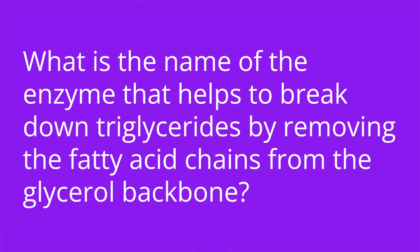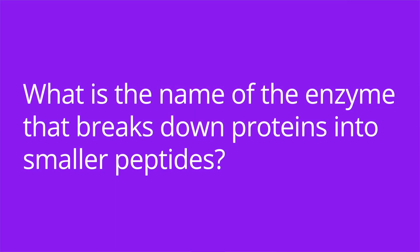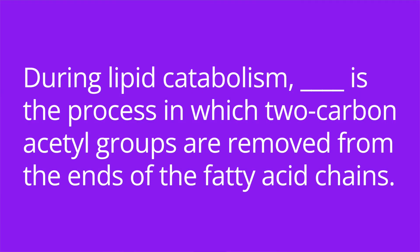It's quiz time, and I have three questions for you. Question number one: What is the name of the enzyme that helps to break down triglycerides by removing the fatty acid chains from the glycerol backbone? The answer is lipase. Number two: What is the name of the enzyme that breaks down proteins into smaller peptides? The answer is protease. Number three: During lipid catabolism, blank is the process in which two-carbon acetyl groups are removed from the ends of the fatty acid chains. The answer is beta-oxidation.